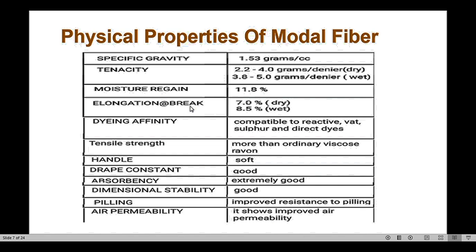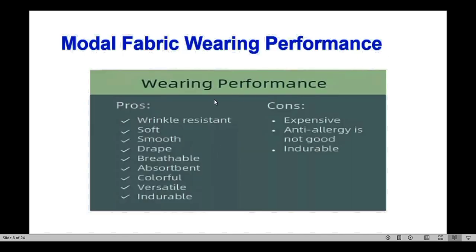Dye affinity is compatible with reactive, vat, sulfur, and direct dyes. Tensile strength is more than ordinary viscose yarn. Handle is soft, making it preferred where soft fabric is required. Drape is good, absorbency is extremely good, dimensional stability is good, pilling resistance is improved, and air permeability is also improved.